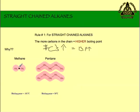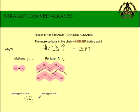Methane has one carbon — they only touch in one spot. Pentane has five carbons and it's a straight chain, so they can line up all along the chain and they're touching in all of those spots. There's more surface area where the two molecules can touch each other, so they're closer together with higher intermolecular forces. Methane boils at negative 161 degrees; pentane boils at 36 degrees. More surface area means the molecules get closer together, the intermolecular forces are stronger, and the boiling point is higher.